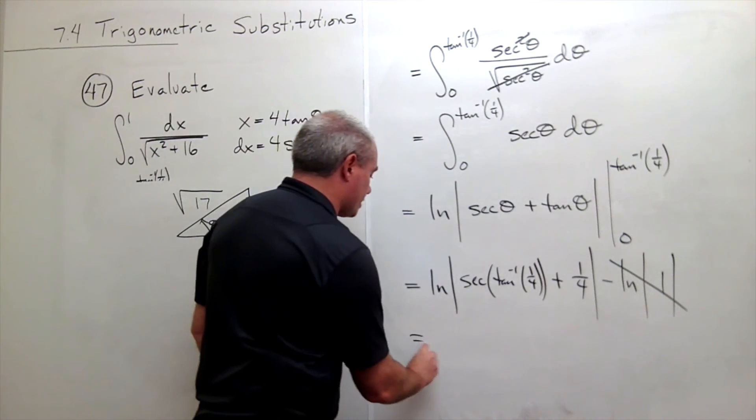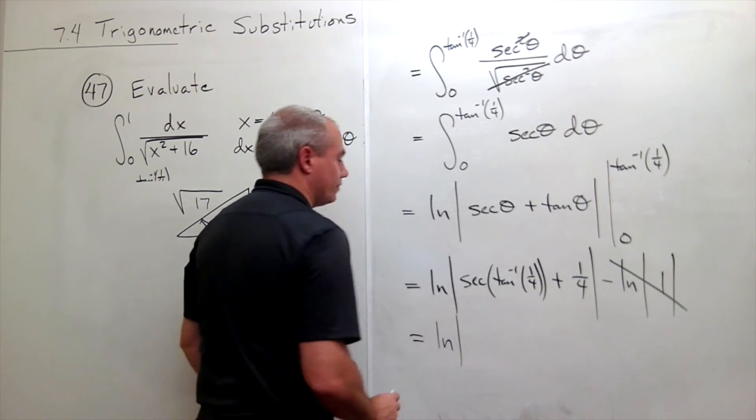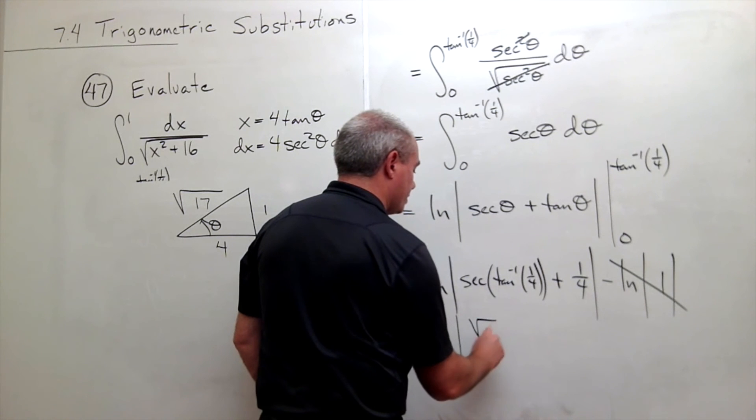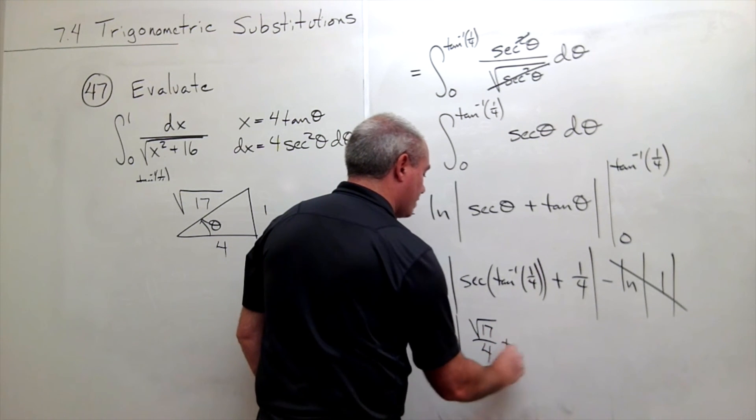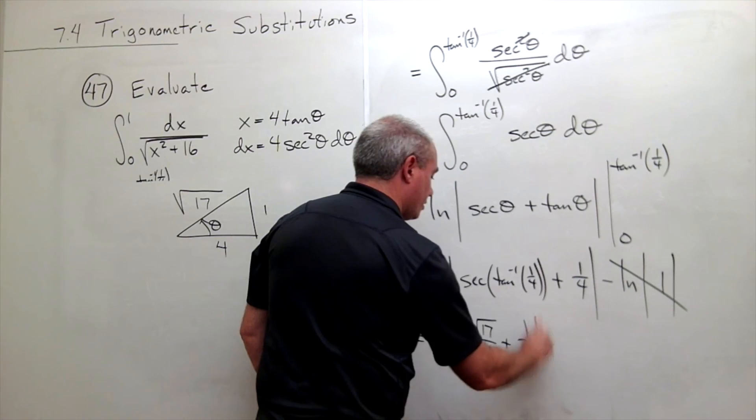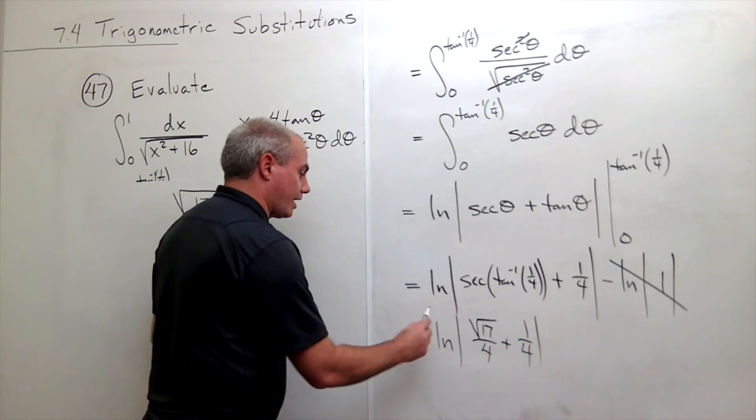So in other words, this is ln of absolute value square root 17 over 4 plus 1 fourth, and that is my answer.